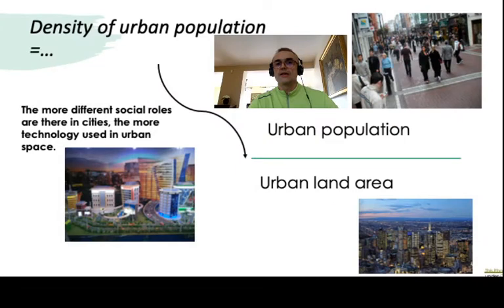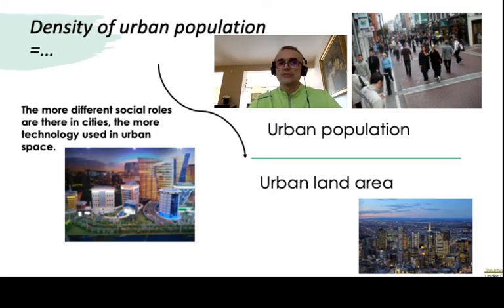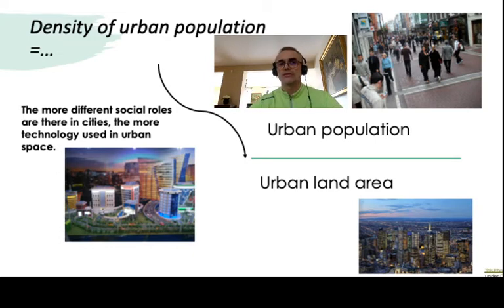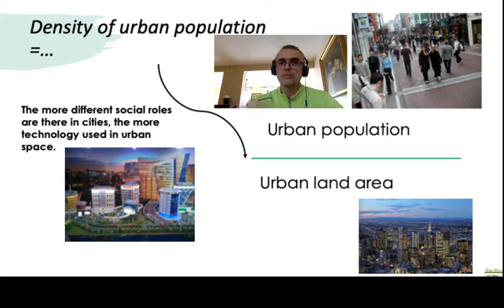In this update I'm going very mathematical, focusing on a specific metric: the density of urban population. Urban density is defined as the headcount of urban population divided by the urban land area — that is, people per square kilometer or people per square mile. My intuition accompanying this coefficient is that the more different social roles exist in cities, the more technology is used in urban space.